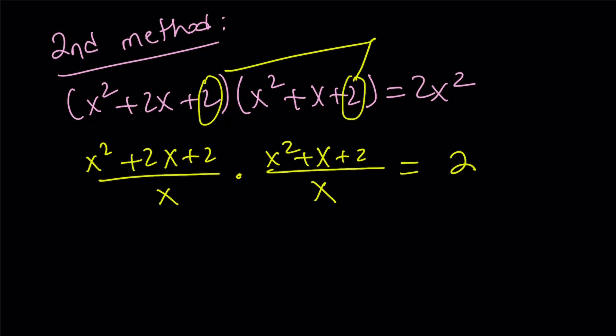Obviously, x equals 0 is not a solution, so we don't have to worry about it. So, if you go ahead and separate this, x plus 2 plus 2 over x, multiplied by x plus 1 plus 2 over x, and this is where the awesome substitution comes in.